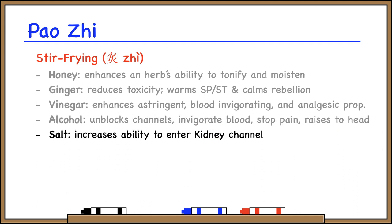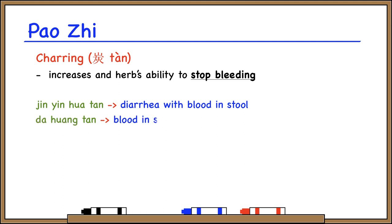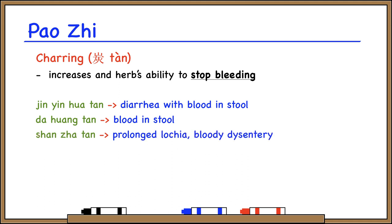Finally, salt. The salty flavor is associated with the kidney channel, so stir-frying an herb in salt can guide it to the kidney and increase its tonifying action — many kidney tonics can be prepared this way. The last method of preparation is charring an herb, which enhances its ability to stop bleeding. Jin Yin Hua clears heat toxicity, but in its charred form can be used for dysentery with blood in the stool. Da Huang is a purgative that clears heat and invigorates blood, but in its charred form it can also stop bleeding, especially blood in the stool. Shan Jia also invigorates blood, but in its charred form it can stop bleeding, especially postpartum bleeding and bloody dysentery.